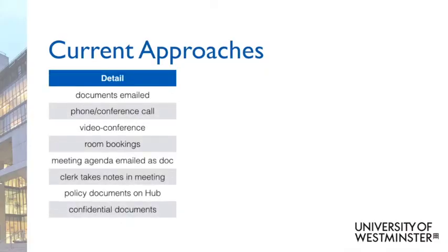On the screen is a list of ways in which people have identified they already use alternatives to paper. Documents can obviously be emailed in advance to people attending meetings. Maybe you don't actually need to meet face-to-face, where you could have a meeting via audio using the phone or have a conference call, either audio or video. The agenda for a meeting could be emailed in advance as a document electronically.